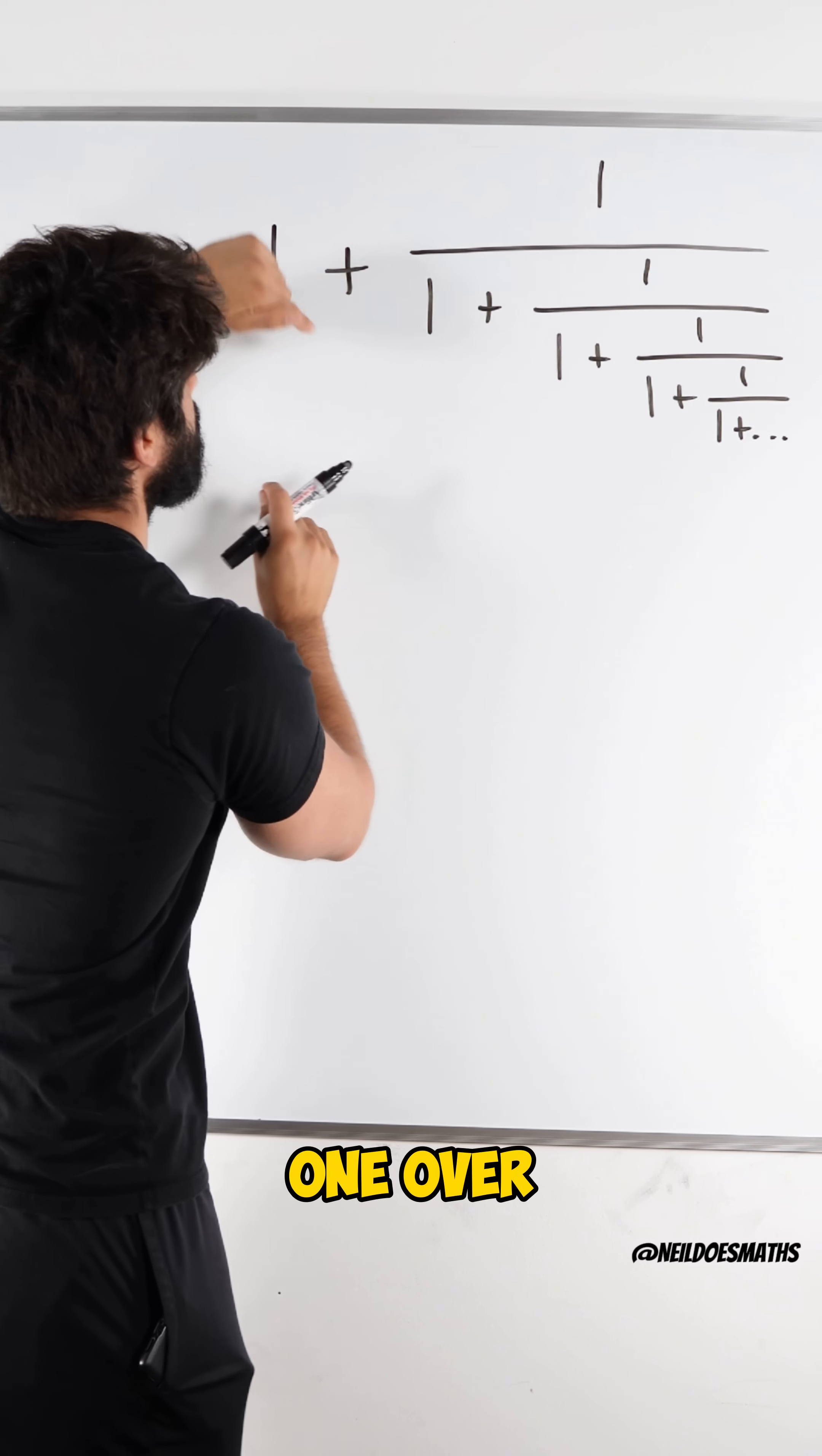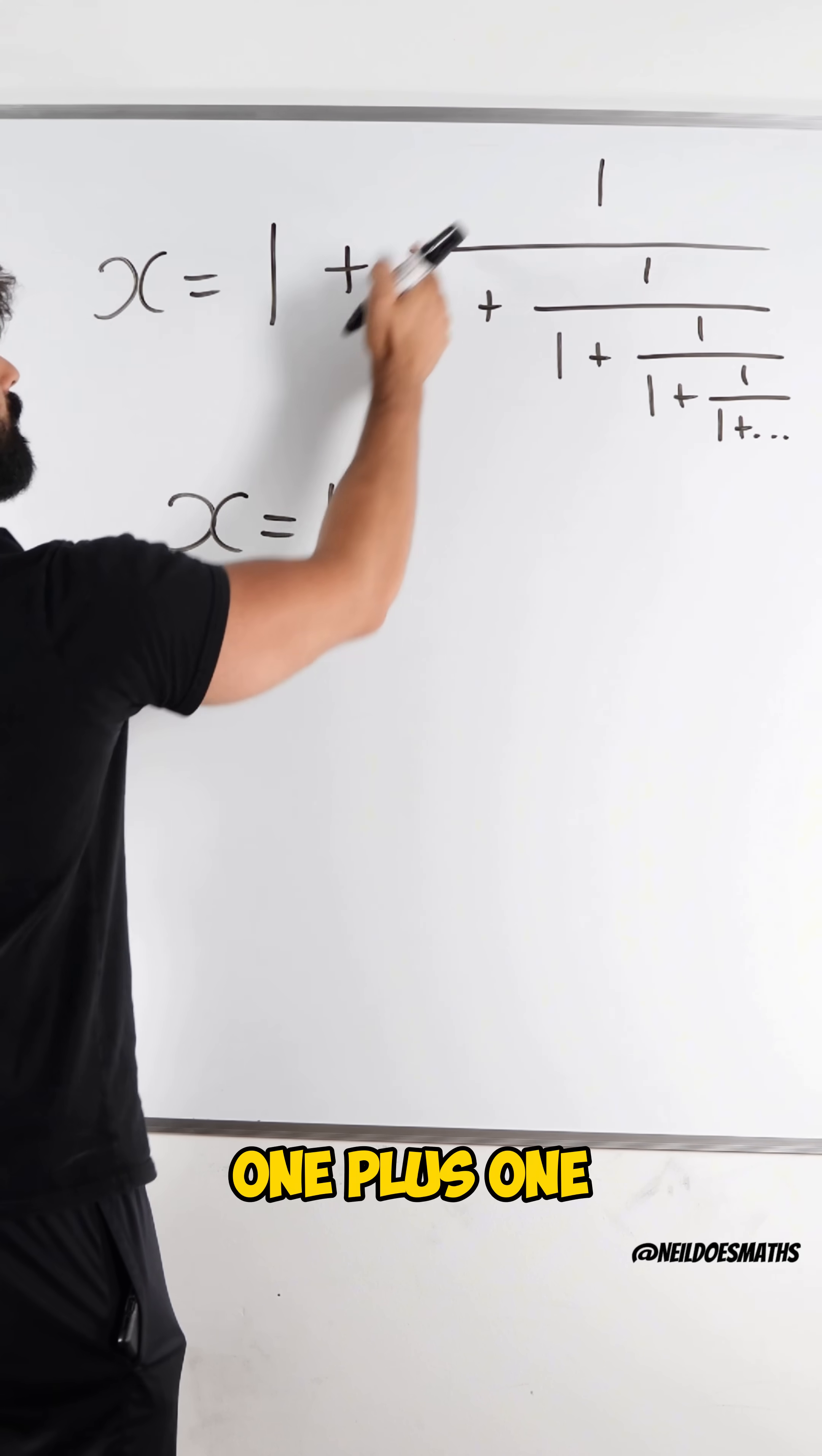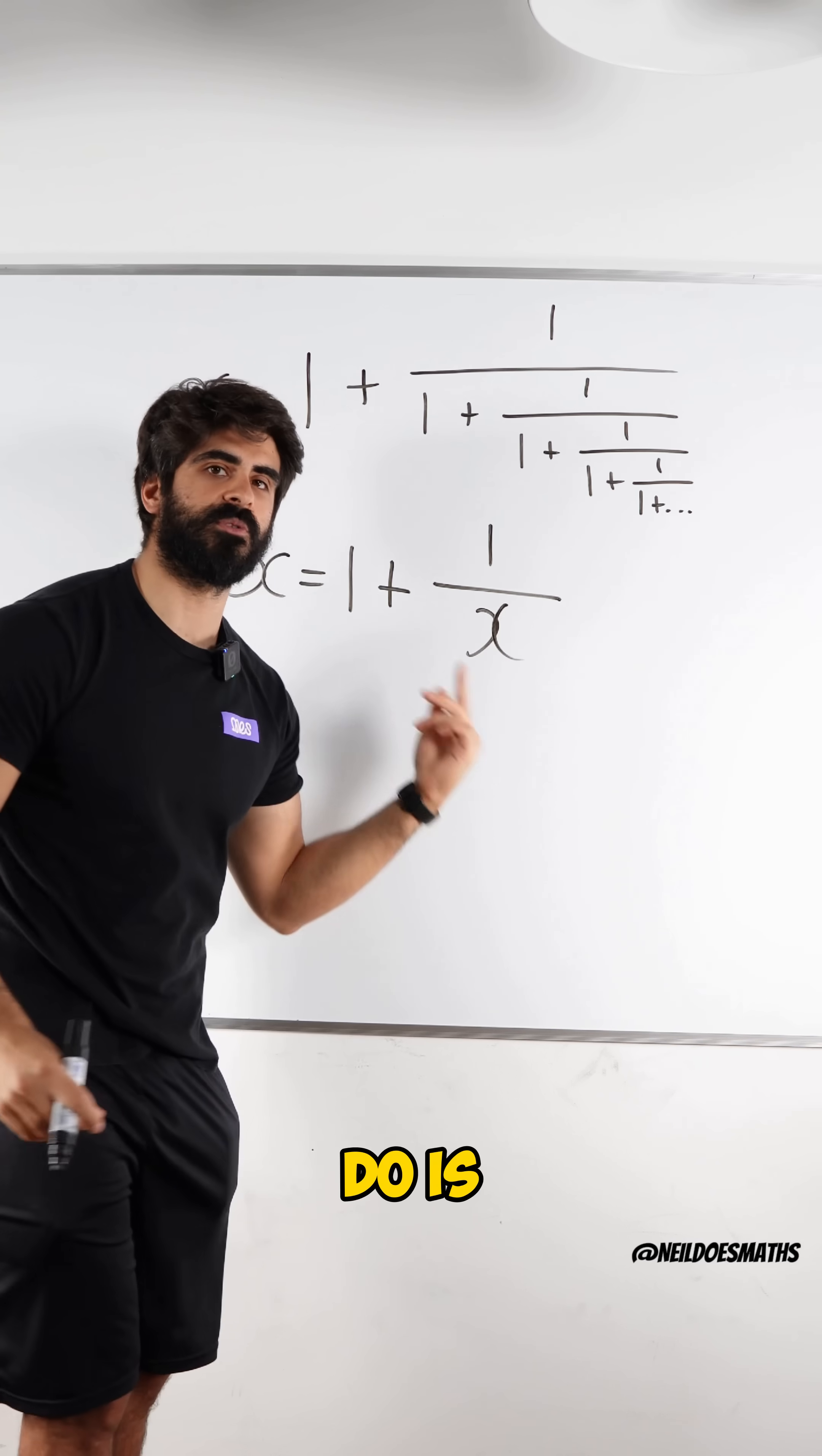So 1 plus 1 over, 1 plus 1 over. So if I let this be x, then I get x equals 1 plus 1 over x. Because this is just x, isn't it? And all we need to do is solve this.